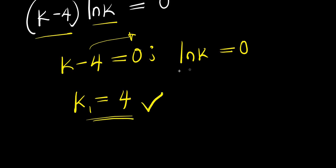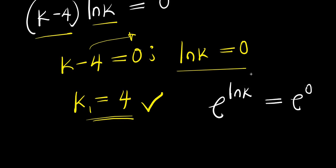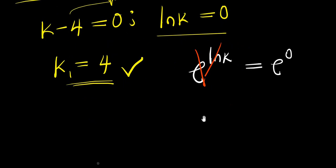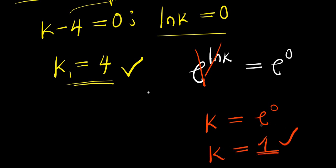Now to solve for k from natural log k equals 0, I need to bring in Euler's identity. I can write e^(ln k) equals e^0. Since e and ln cancel out, that means k equals e^0, and e^0 equals 1. So our second solution is k = 1.